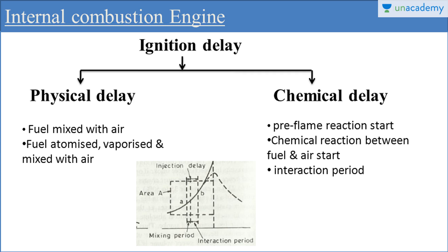In a compression ignition engine, the fuel generally comes in the form of small droplets from the fuel injector, which convert into vapor slowly when entering the combustion chamber. In that condition, more oxygen from the air is required to burn the fuel. So the air-fuel mixture should be richer for proper combustion of fuel in a compression ignition engine.